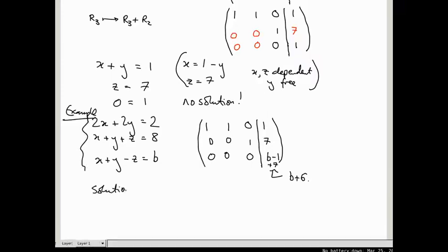So, solution exists if, and only if, b is minus 6. And in this case, the solution is exactly what I wrote up here. It's x and z are dependent variables, y is free, and x is 1 minus y, and z is 7. That comes from the first two rows. So, the moral of this is any row of zeros in your matrix in reduced echelon form is giving you a constraint that has to be satisfied if their solution is to exist. And any of the other rows are giving you a way of expressing a dependent variable in terms of free variables.